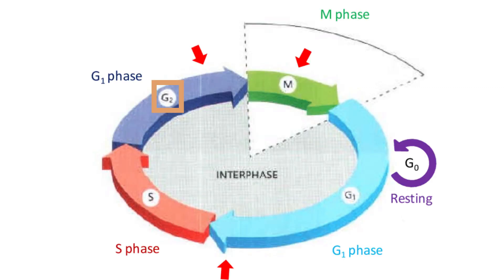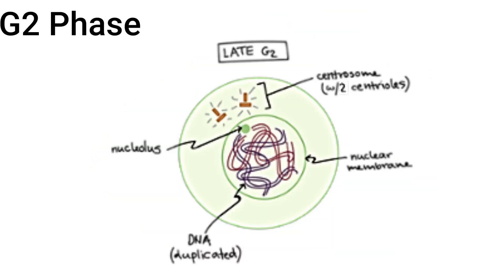The next phase is the G2 phase, where the cell continues to grow and make more proteins and organelles to make sure that there are enough for two cells. It also begins to reorganize in order to prepare for mitosis.